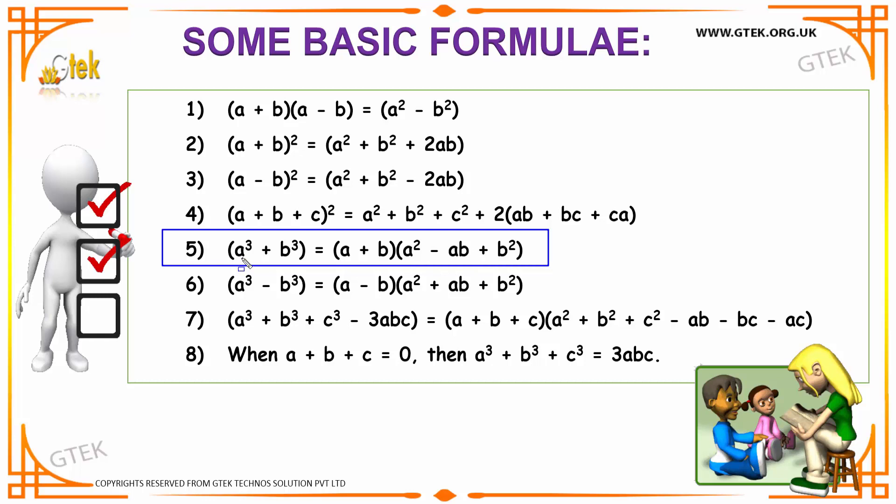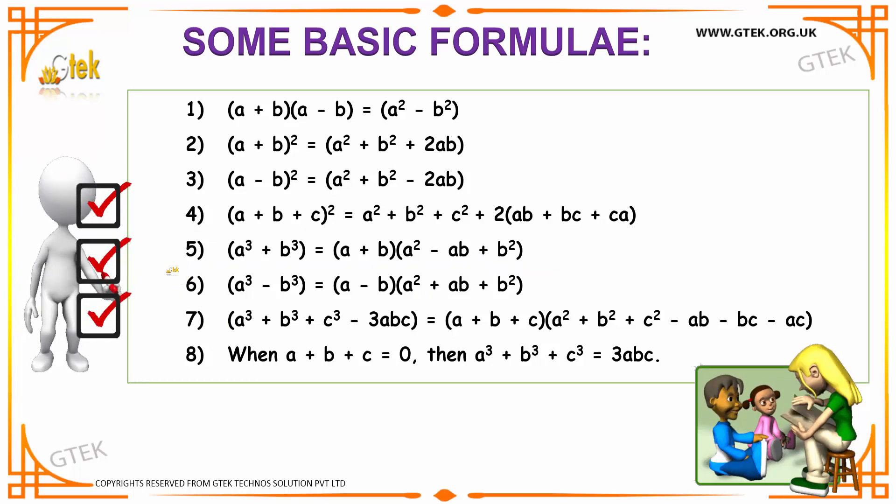A fifth formula says that a³ + b³ is equal to (a + b)(a² - ab + b²). A sixth formula says that a³ - b³ is equal to (a - b)(a² + ab + b²).